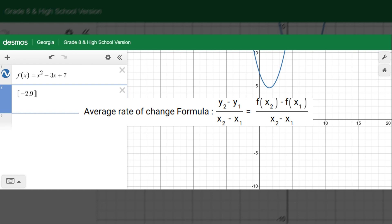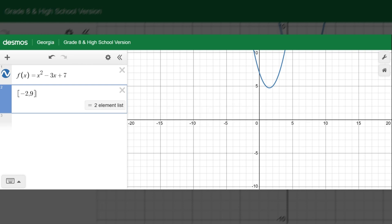As you know, the average rate of change formula is y2 minus y1 all over x2 minus x1, same as f of x2 minus f of x1 all over x2 minus x1.